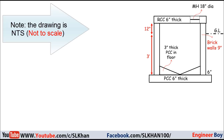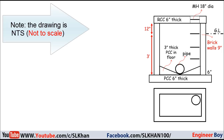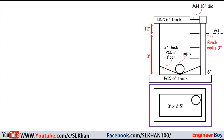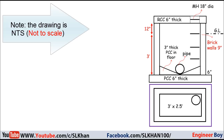We also have 3 inches thick PCC in the floor, iron steps just below the manhole, and a pipe at the middle of the triangular portion. The plan of the manhole looks like a rectangle and the size is 3 by 2.5 feet. Keep in mind this drawing is NTS — not to scale — and all the data is assumed.